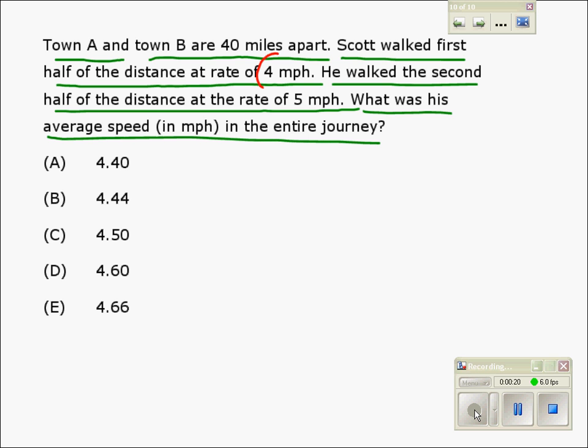If we simply take the average of 4 miles per hour and 5 miles per hour, it's going to be wrong. You can't add two rates in a typical distance, rate, and time problem. This is a typical distance, rate, and time problem.